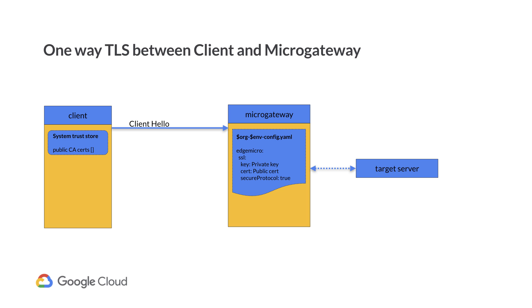As you may know, any TLS server will have a public certificate and a private key. The certificate includes the public key, information about the identity of its owner, and the digital signature of the certificate authority that has issued the certificate. The server sends its certificate as a response to the client in the server hello message.